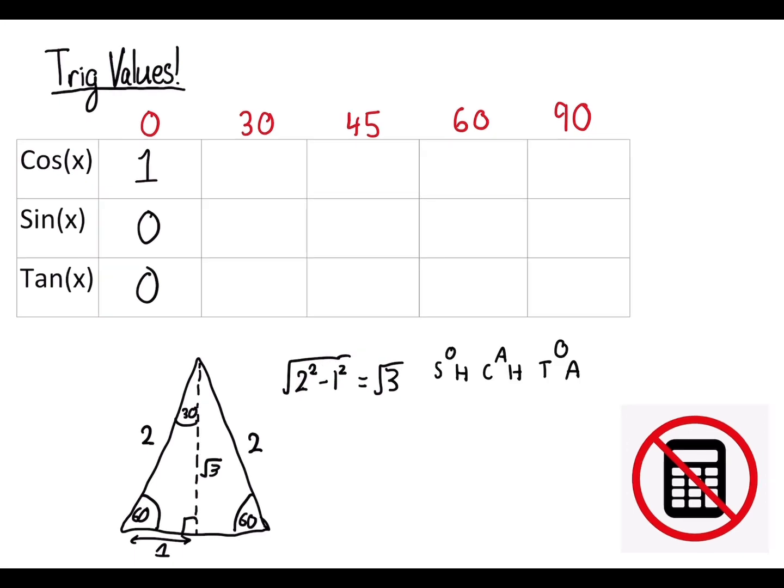So for example, if we want to find the exact value of tan 30, we know we have to use this equation. Opposite and adjacent is what we're going to need. So we want 30 degrees, so we're going to choose adjacent to 30 degrees. So a will be this, and the opposite is obviously going to be this then. So tan of theta, which is 30 degrees, is equal to opposite over adjacent. So 1 over root 3. So we can fill this in, tan of 30, 1 over root 3.